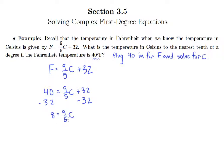And then we know how to get C by itself. Multiply by the reciprocal of 9 fifths. So I'm going to write 8 over 1 on the left side equals 5 ninths times 9 fifths C. So we have 40 over 9 equals C.